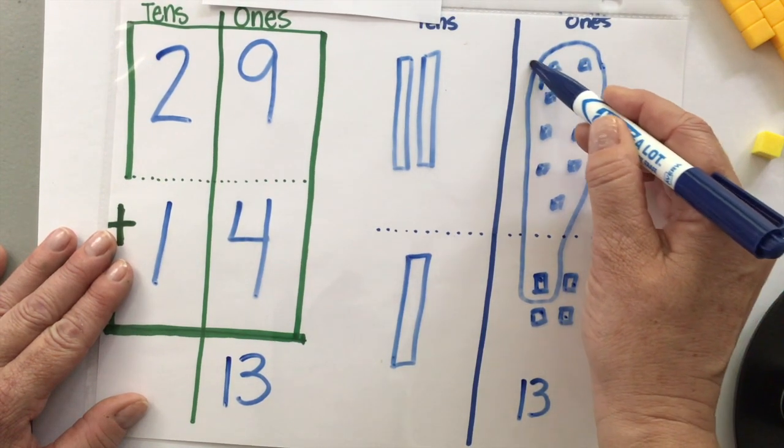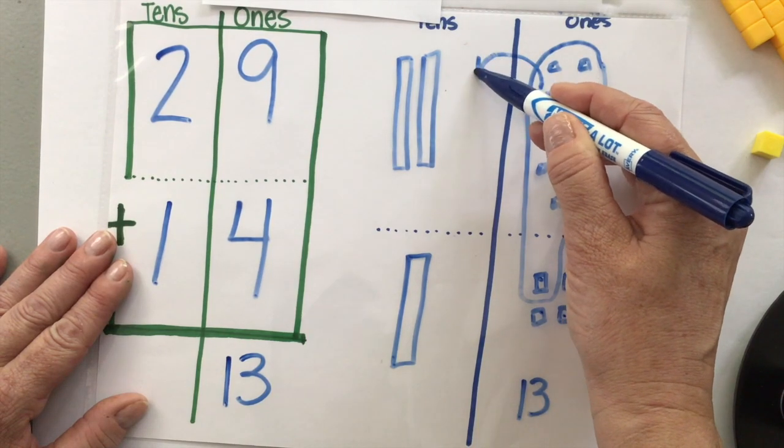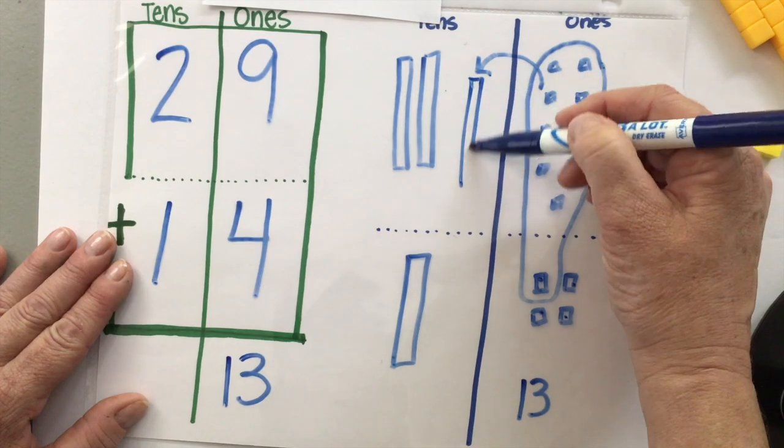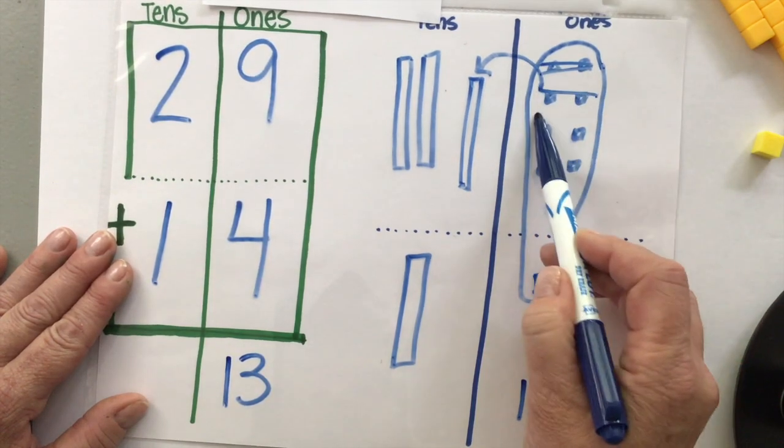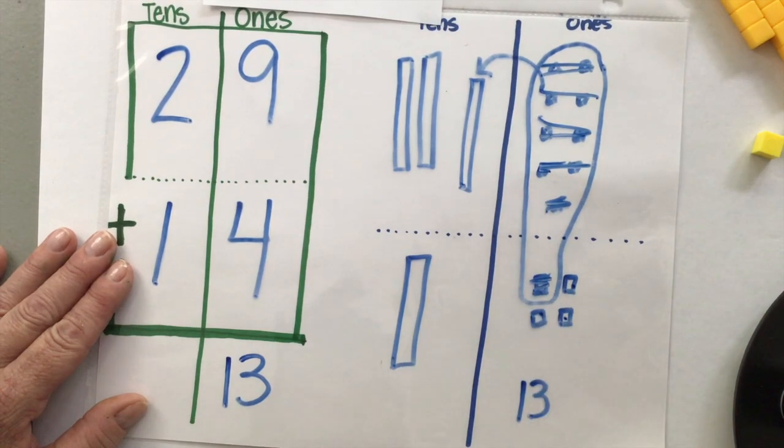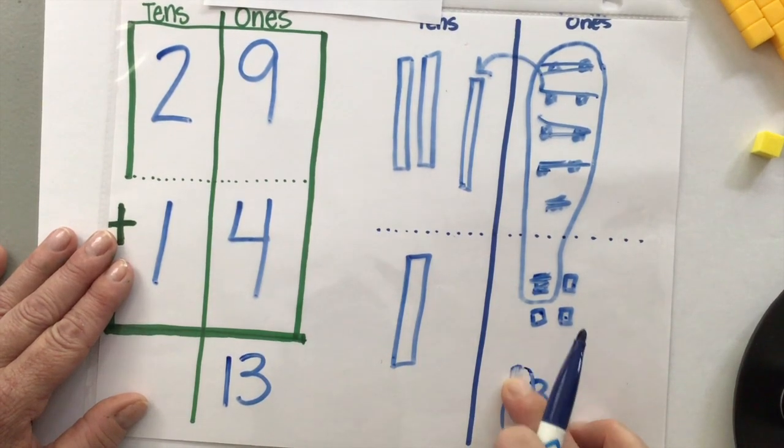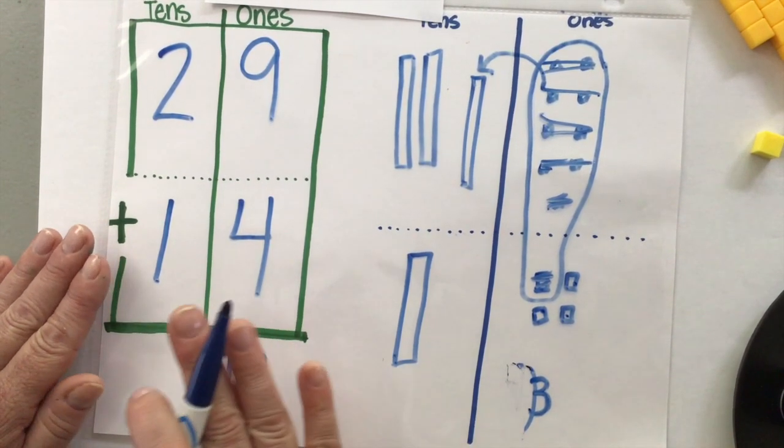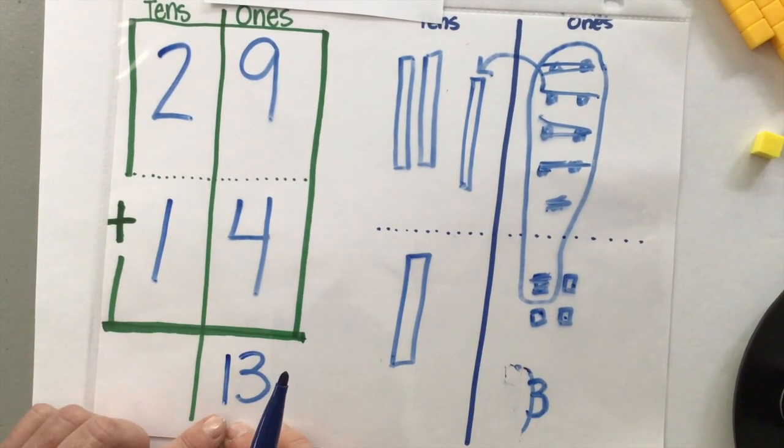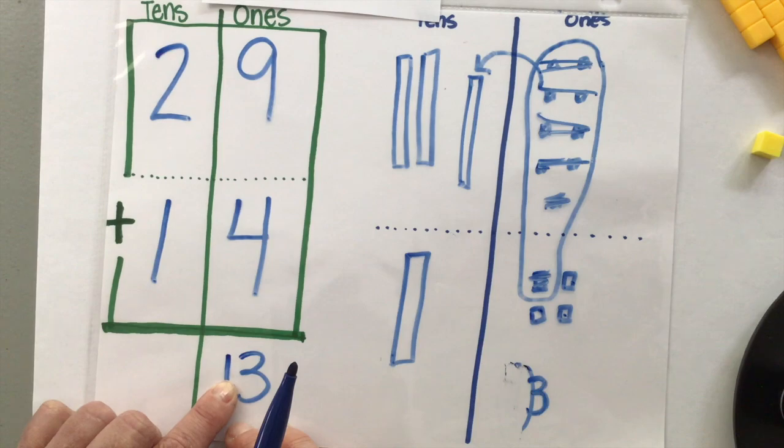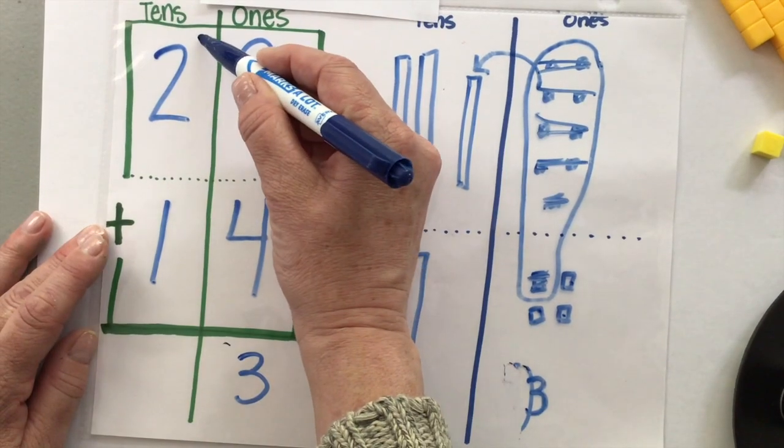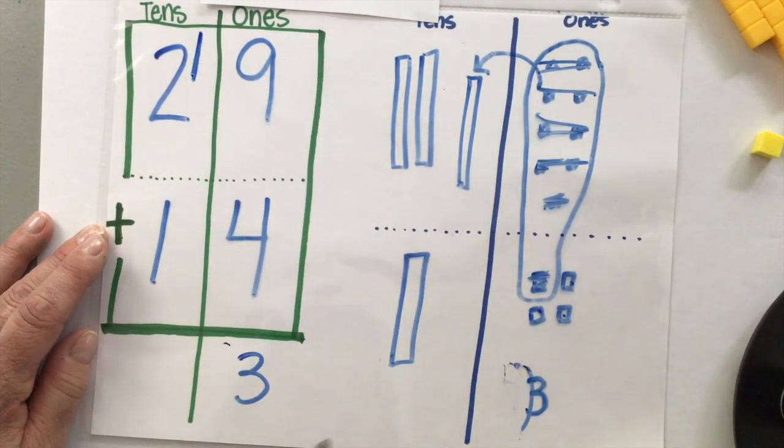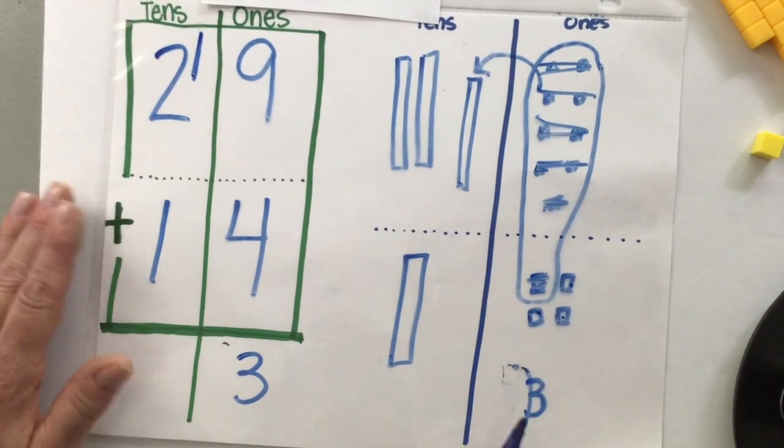So this set of 10, I'm going to carry and put them over here. So essentially I moved these 10 cubes over. This one represents that one set of 10. I moved it over. I carried it to the other side. When we just use numbers, we know that this set of 10 can't be in this ones column, but we carry that set of 10 and we put it over here.